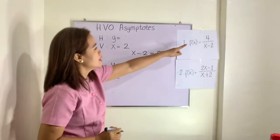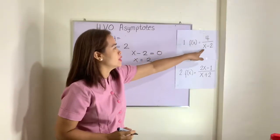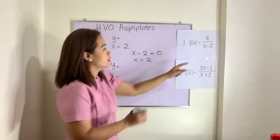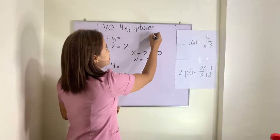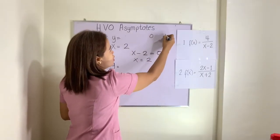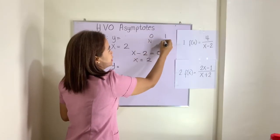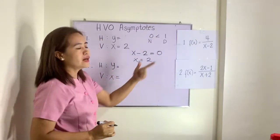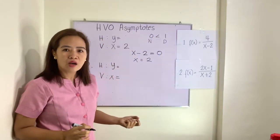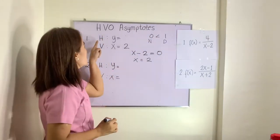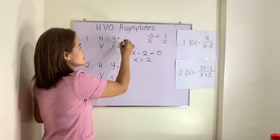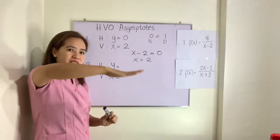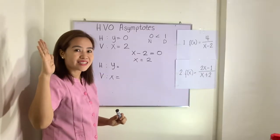Now, compare the degree of the numerator and denominator. The degree of the numerator is 0 and the degree of the denominator is 1 — the numerator's degree is less than the denominator's degree. If the degree of the numerator is less than the denominator, automatically your horizontal asymptote is y = 0. Note: horizontal is y equals, and vertical is x equals.